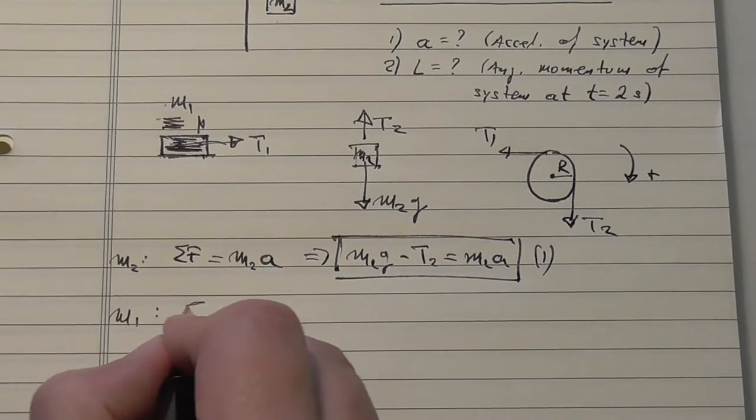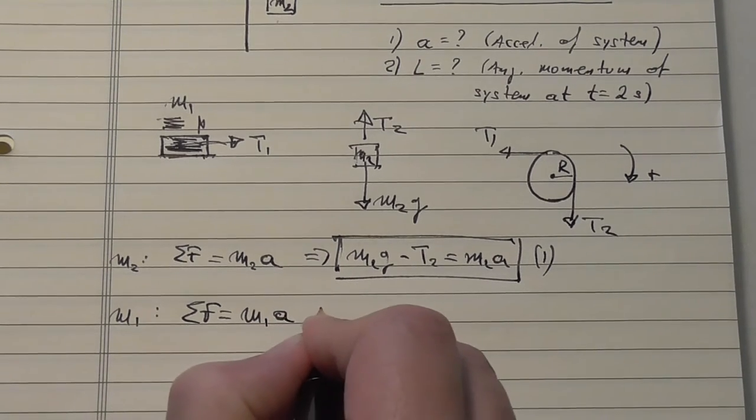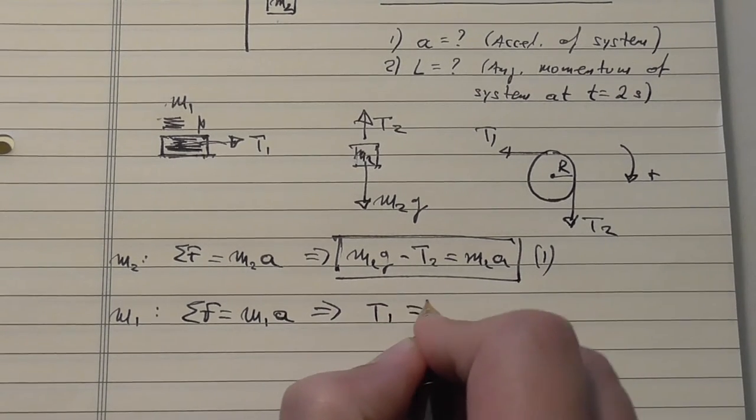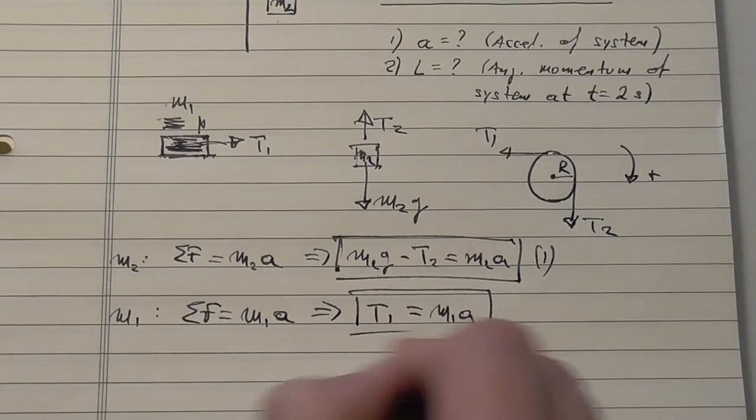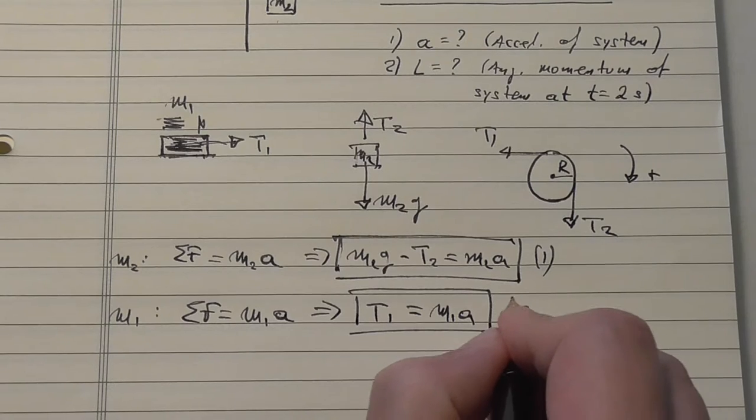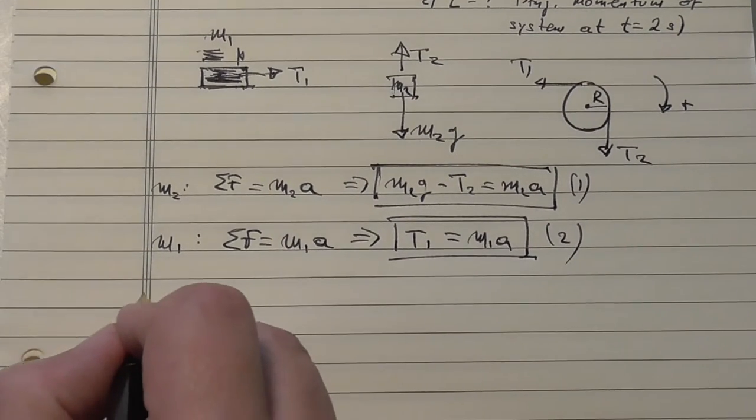First body, sigma F equals m1a. It's just one force, T1 is equal to m1a. Call this equation 2. I'm slowly getting the hang of applying more pressure on this.